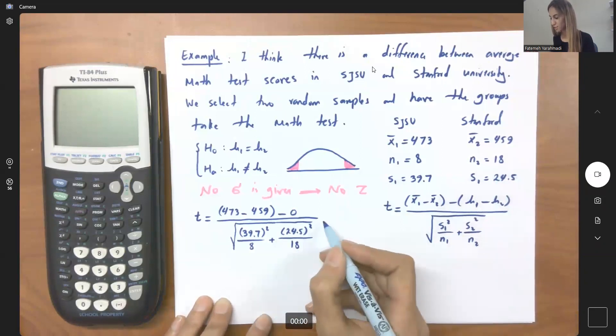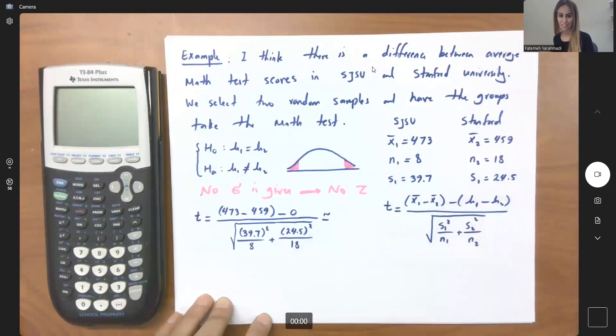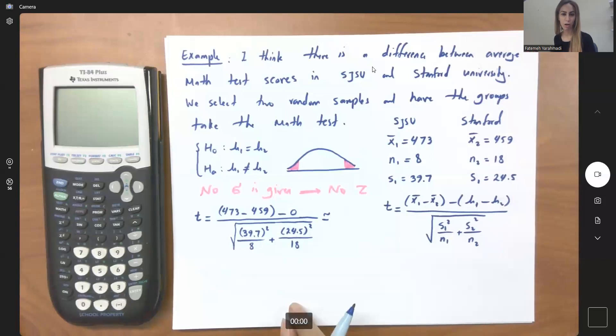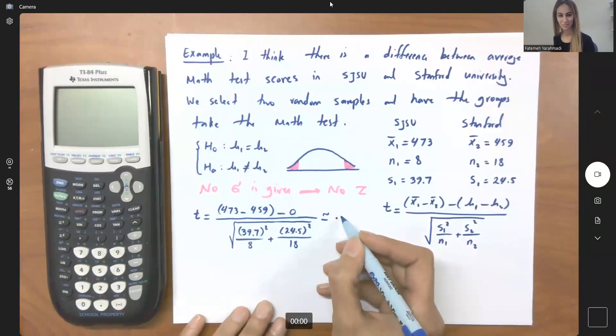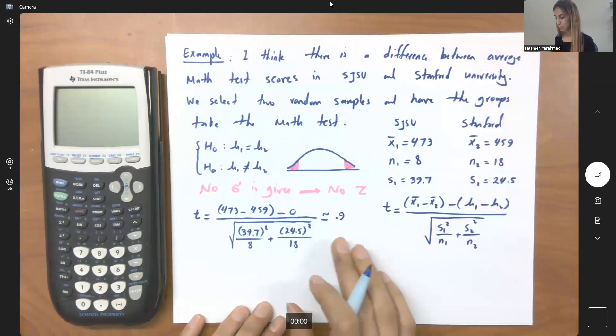So what is this t? Take a moment. Pause. Calculate t for me. Well, your calculation should show 0.9. Very good. So this is your t.